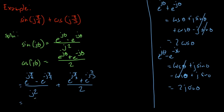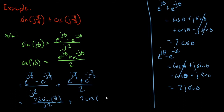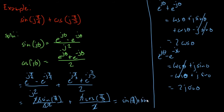Substituting, we have 2j sin(π/4) over j2 plus 2cos(π/3) over 2. Wait — this should be π/4, not π/3, sorry for that. So canceling the 2s and the j, we end up with sin(π/4) plus cos(π/3).